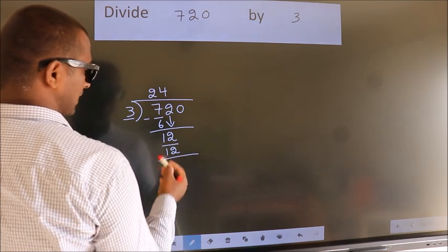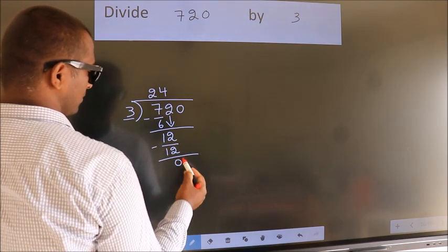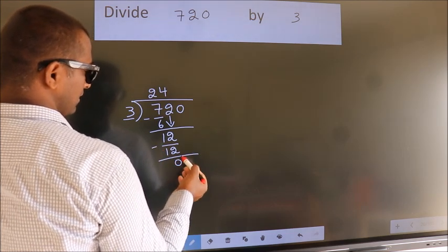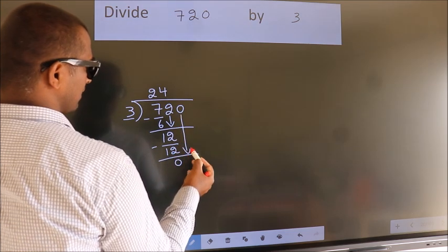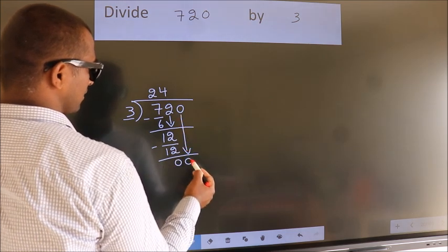Now, we subtract. We get 0. After this, bring down the beside number. So, 0 down. So, 0.